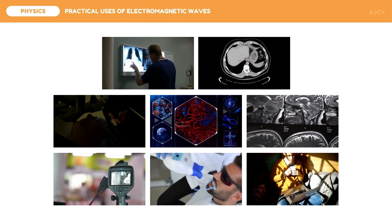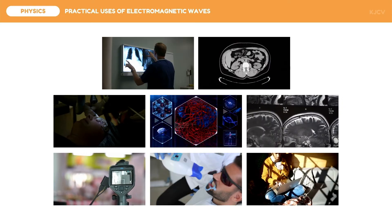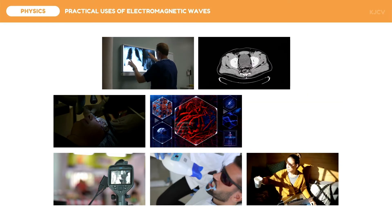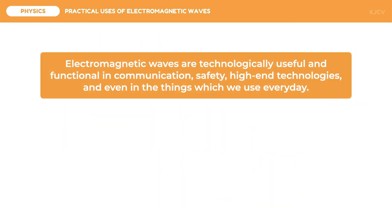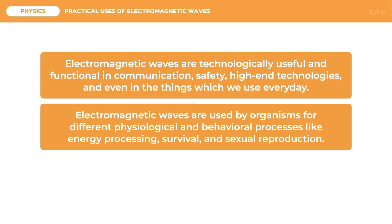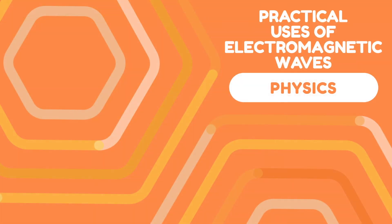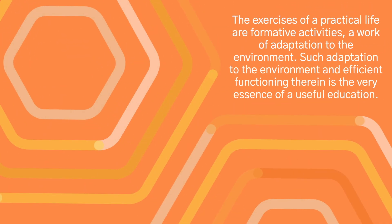Electromagnetic waves are used in the natural and technological aspects of health and medicine, and are useful at home, in public places, hospitals, and even outdoors. To review the key points: electromagnetic waves are technologically useful in communication, safety, high-end technologies, and everyday items. They are used by organisms for physiological and behavioral processes like energy processing, survival, and reproduction. Lastly, electromagnetic waves are used to prevent, detect, manage, and treat diseases. That ends our discussion on the practical uses of electromagnetic waves.